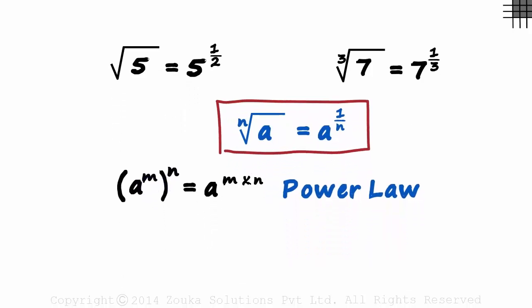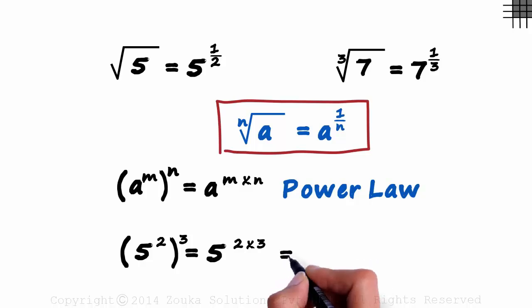So if we have something like 5 raised to 2, the whole raised to 3, it can be written as 5 raised to 2 times 3, and that equals 5 raised to 6.